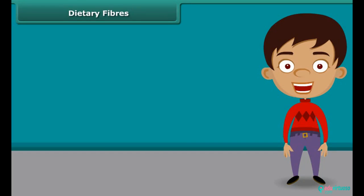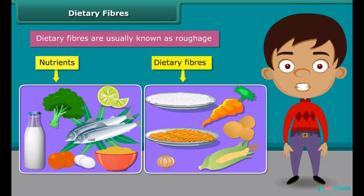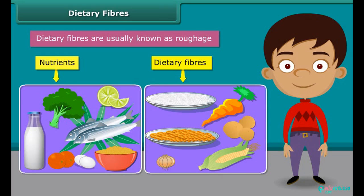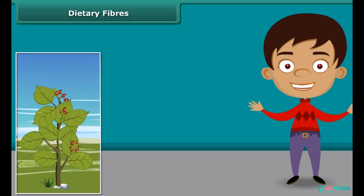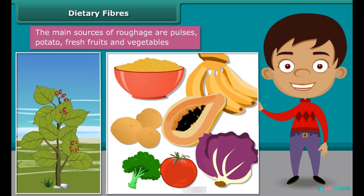Besides nutrients, dietary fiber also plays an important role in our body. They are usually known as roughage. Roughage does not provide any nutrition to our body but adds bulk. They are found only in plants — pulses, potato, fresh fruits and vegetables are the main sources of roughage. This helps our body to get rid of undigested food.